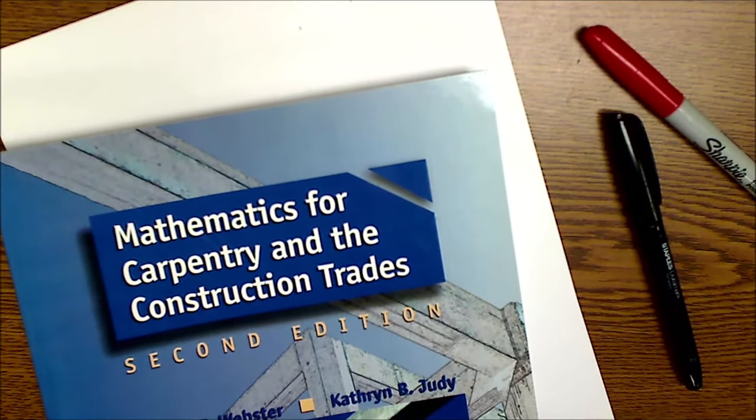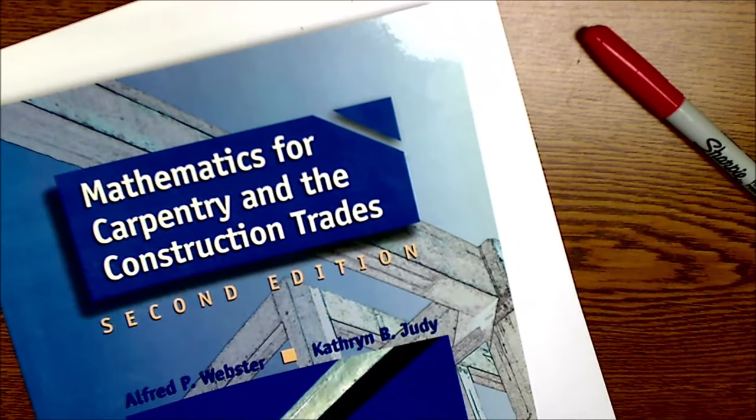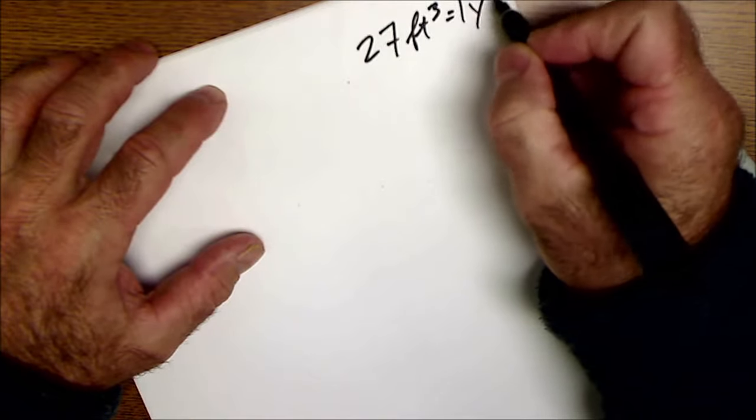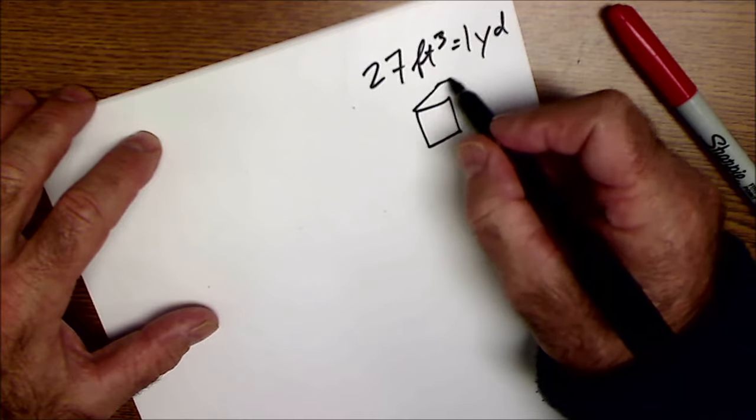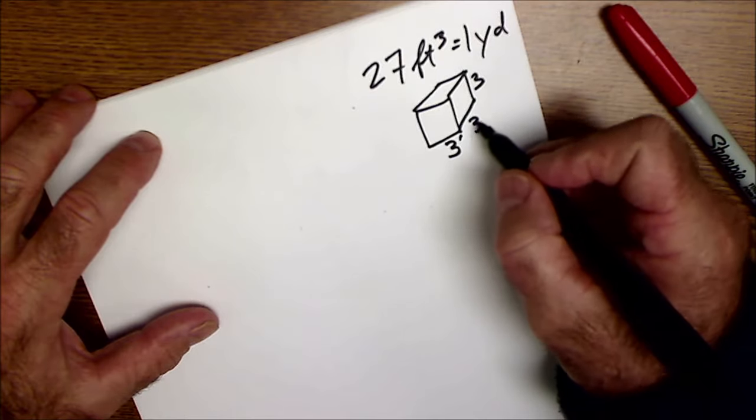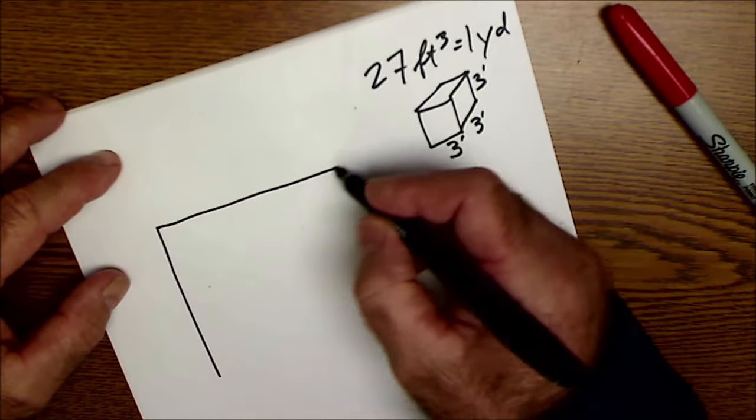This is from the Math for Carpentry and Construction Trades book. I'll put a link to this in the description—the link will be the third edition, this is a second edition. And we're in the chapter working on foundations and footings, and we're just going to calculate how to order concrete. Again, there are twenty-seven cubic feet equal one yard of concrete, and the reason why that's the case is that a yard is three by three by three. Three times three is nine, nine times three is twenty-seven.